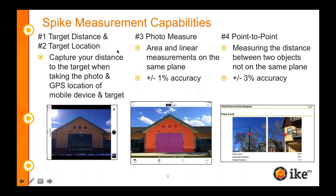Moving forward, Spike has four different measurement capabilities that we want to make you aware of. The first one is target distance. Because Spike is a laser range finder, it knows how far back you are, so it gives you that offset distance. That is also a very key component to the measurement science behind Spike, which is photogrammetry.